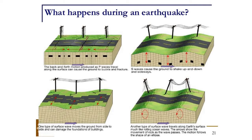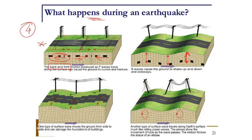During any earthquake the ground moves, and it can move in four ways. First, the ground gets compressed then tensioned — this is known as the back-and-forth effect, which is a lateral movement. Second, the ground can move up and down, which we are not interested in. Third, the ground can move laterally from side to side, and we are also interested in this one as it is also a lateral form of movement.